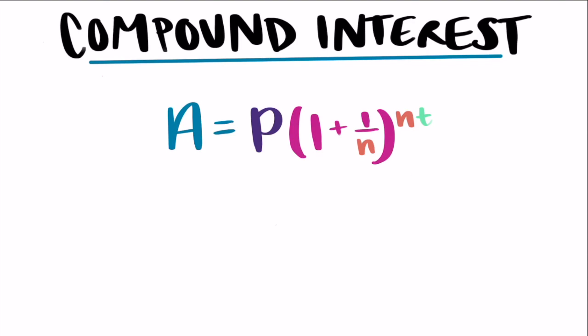Starting with P, that is going to be your principal or the money. So the amount of loan you took out, the amount that you have in a bank making interest. Principal is going to be the amount of money you're putting in.